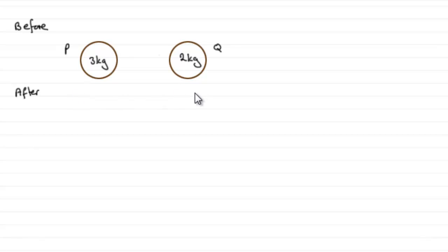We're told that P is moving towards Q at a speed of 3 meters per second, so I'd want to put in an arrow something like this saying that's 3 meters per second. We're told that Q is moving towards P before the collision at 2 meters per second.